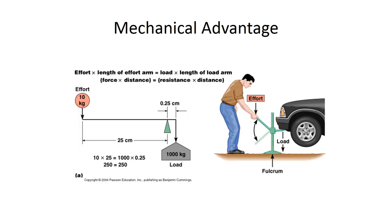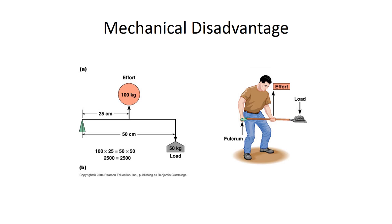Levers can operate in one of two ways. With mechanical advantage, the load is close to the fulcrum and the effort is applied far from the fulcrum — this requires minimal effort to move a large load and is therefore designed for power. With mechanical disadvantage, the load is far from the fulcrum and the effort is applied near the fulcrum — this requires greater force than the load, but although it cannot move a large load, it can move loads farther and faster, functioning like a speed lever.